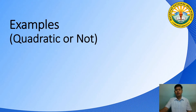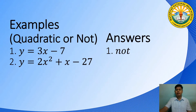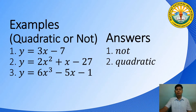This time, let's try to determine if the given examples are quadratic functions or not. Example number 1: y is equal to 3x minus 7. It is not a quadratic function since the degree is not 2. Example number 2: y is equal to 2x squared plus x minus 27. It is a quadratic function since the degree is 2. Example number 3: y is equal to 6x cubed minus 5x minus 1. It is not a quadratic function since the degree is 3.